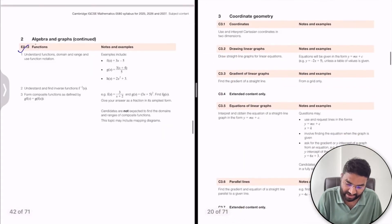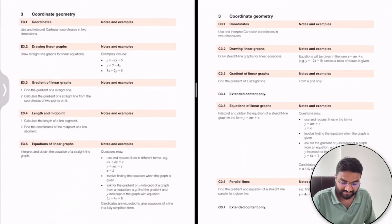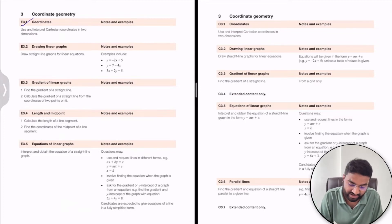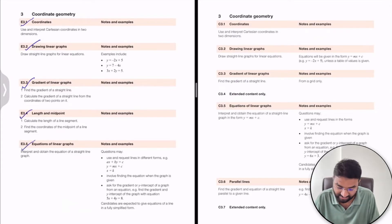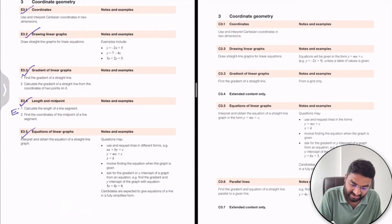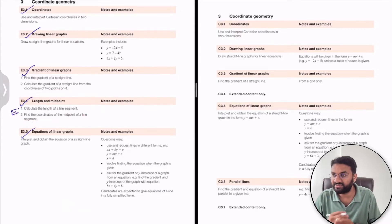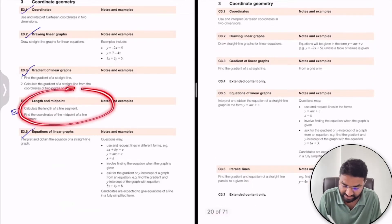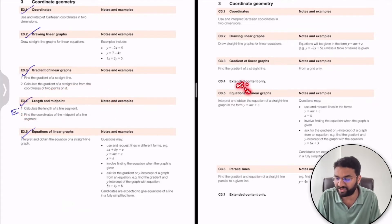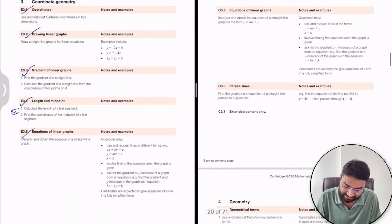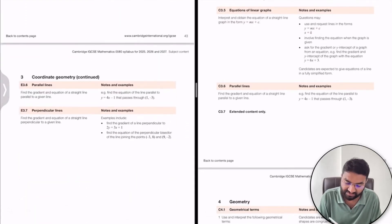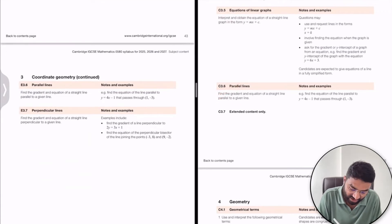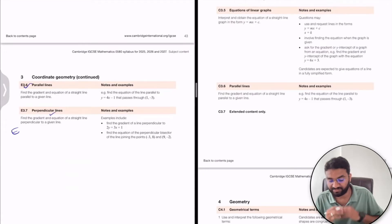The third topic is Coordinate Geometry. This covers the x-axis, y-axis, drawing linear graphs, gradient, length and midpoint formula, and equation of a linear graph. For extended students, the length and midpoint formula is extra content. For core students, this part is excluded. Regarding line concepts, core students only need the parallel line concept, while extended students also need the perpendicular line concept.